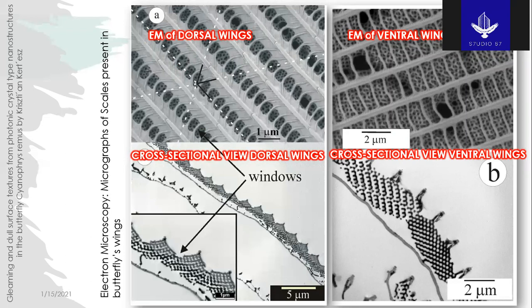These grains act as photonic crystals and they constitute the bright colors of butterflies, depending on observation angle and the incident angle of light.